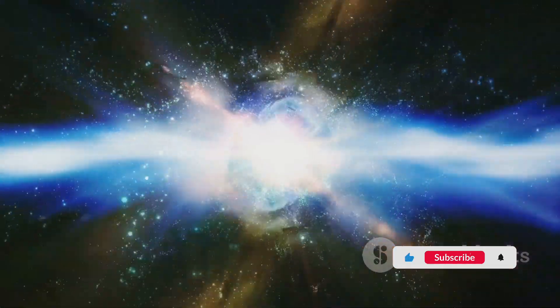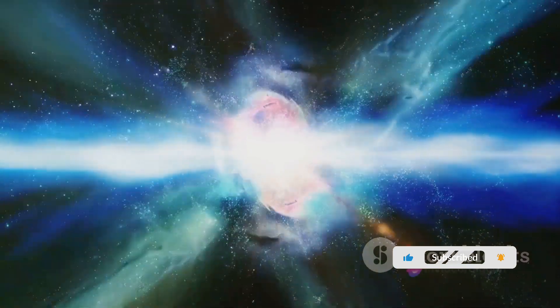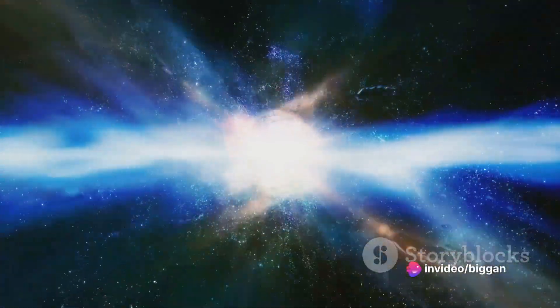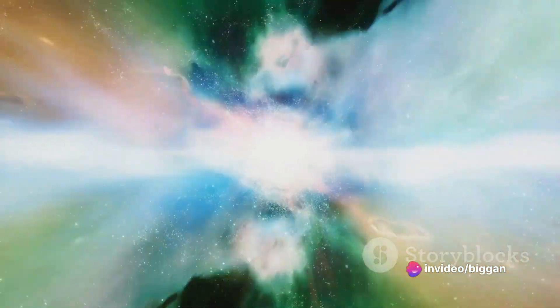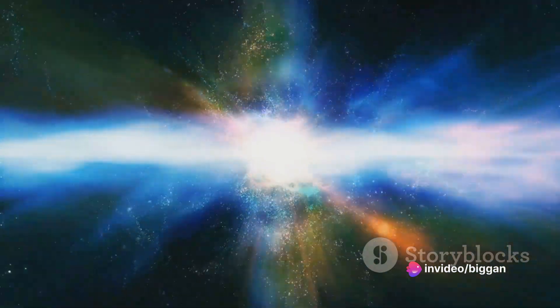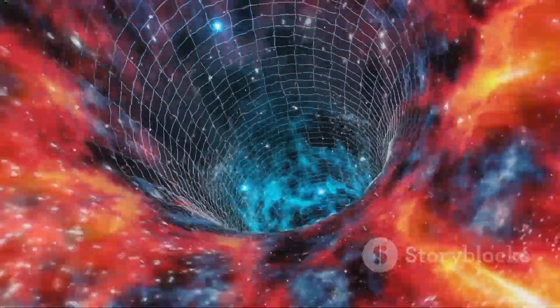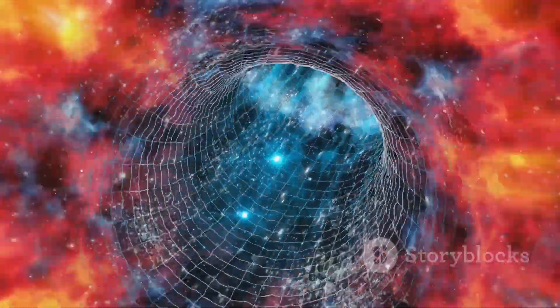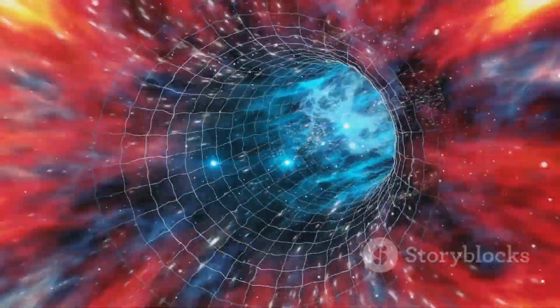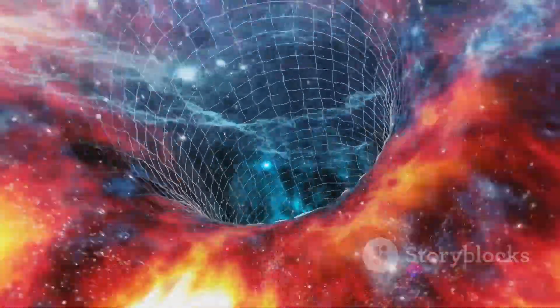You see, different particles interact with the Higgs field in different ways. Some particles, like photons, don't interact with it at all, which is why they're massless and can zip through the universe at the speed of light. Other particles, however, interact a lot with the Higgs field, slowing them down and giving them more mass.